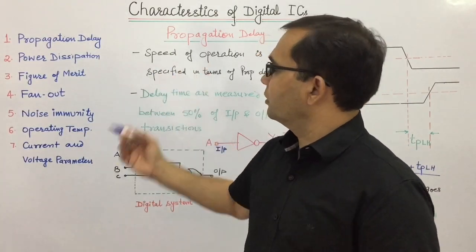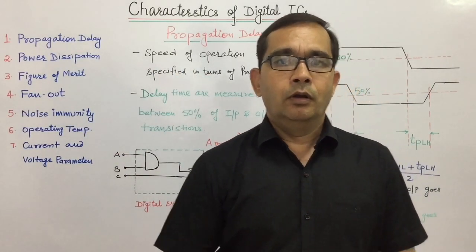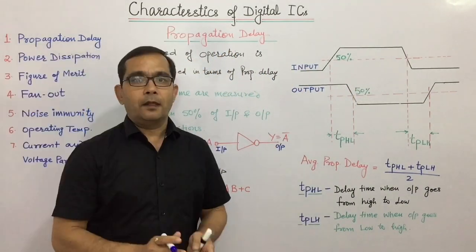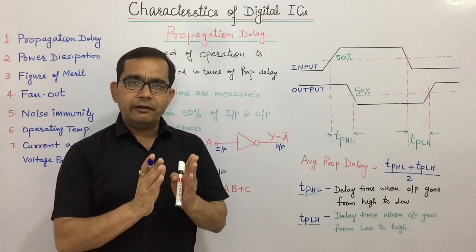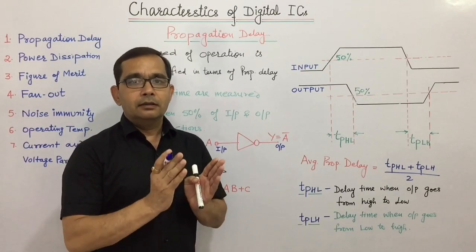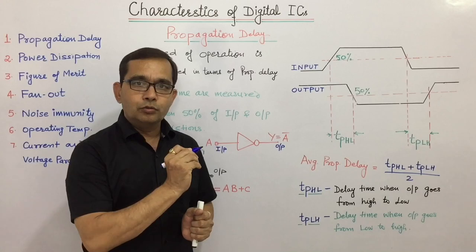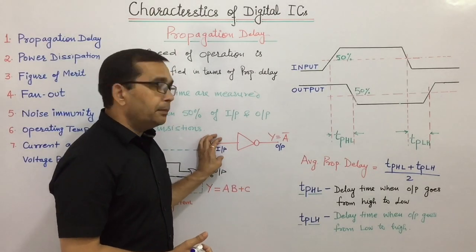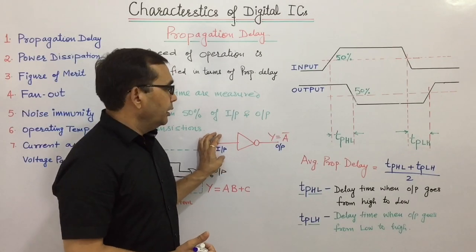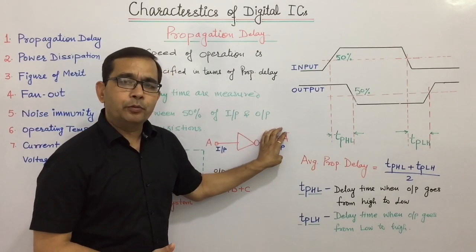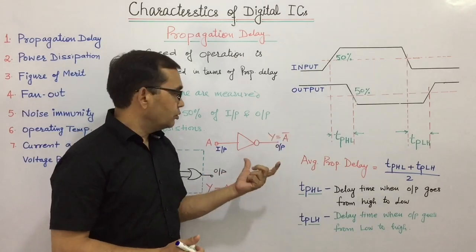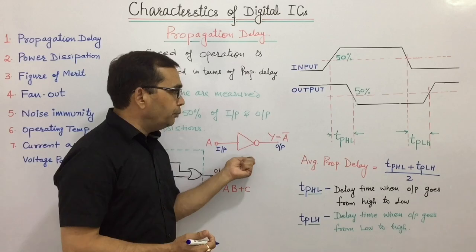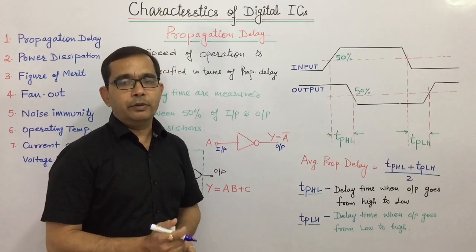Let us take the first parameter: propagation delay. The propagation delay of a gate is the average transition time that a signal takes to propagate from input to the output. When we apply a signal at a gate's input, it will take a certain time to propagate to the output. This particular interval of time is called propagation delay.